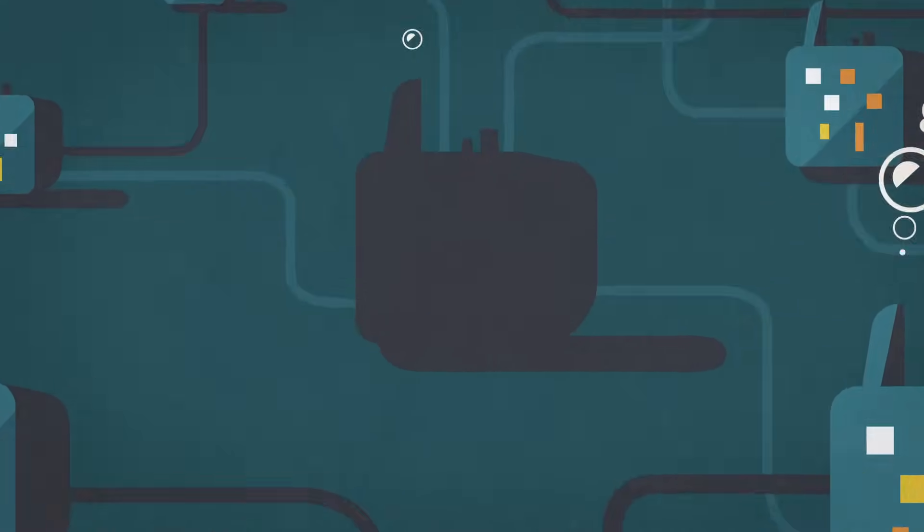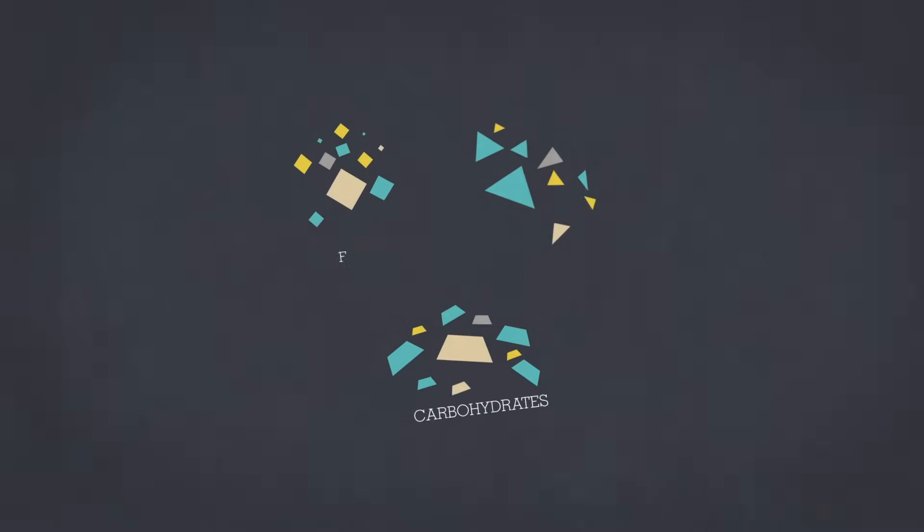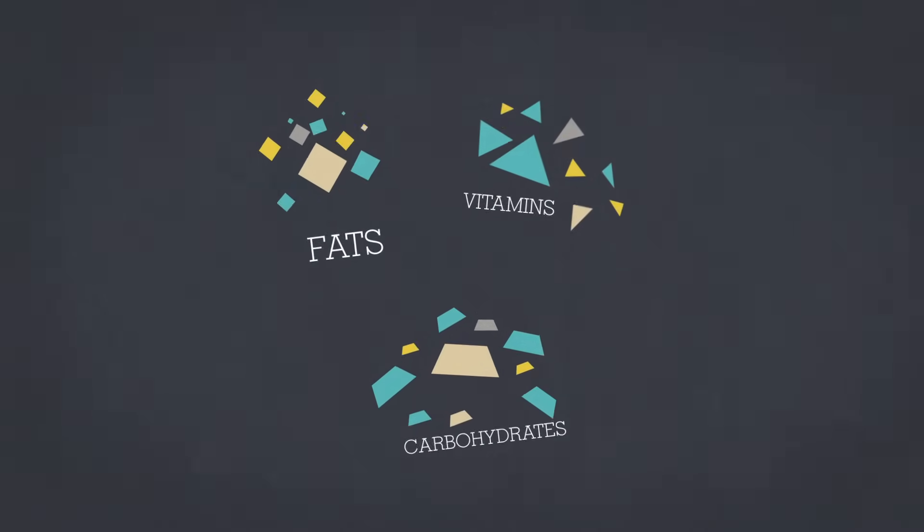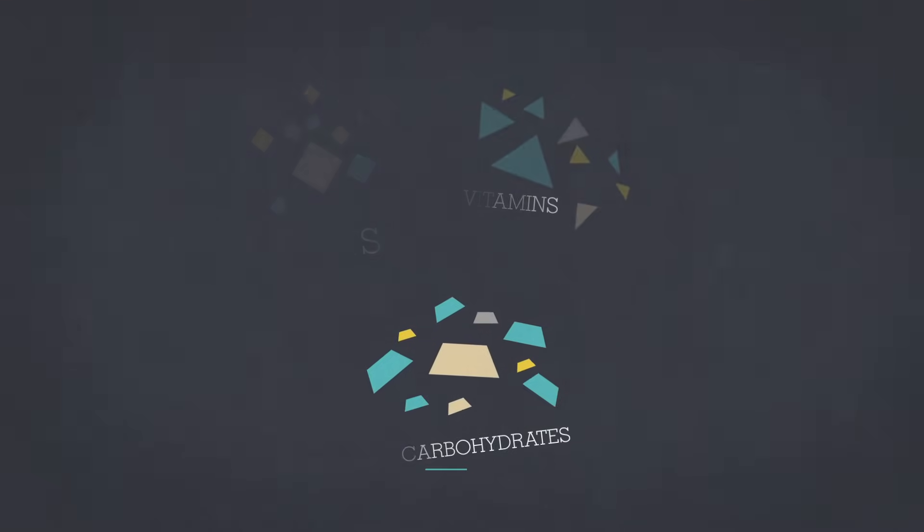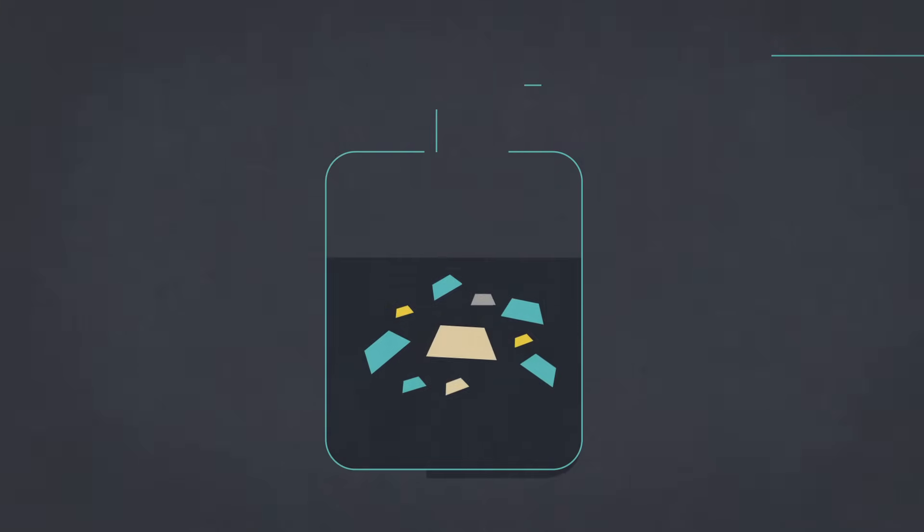The blood received from the intestine contains carbohydrates, fats, and vitamins and other nutrients dissolved in it from the food you've consumed. These must be processed in different ways.